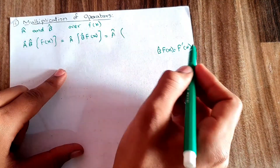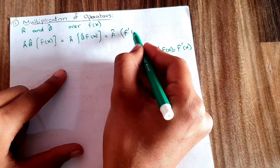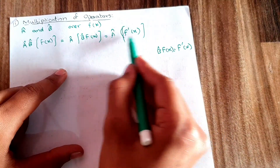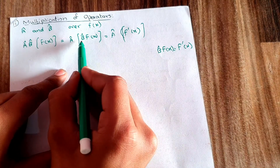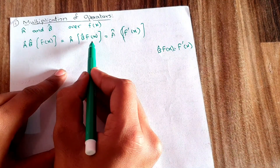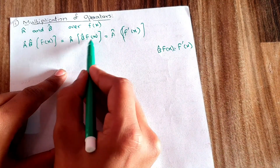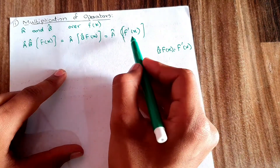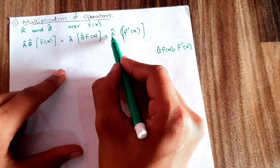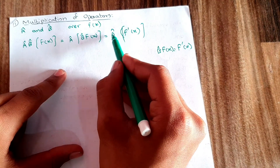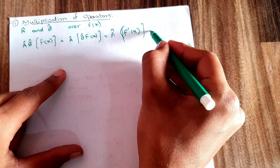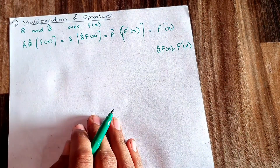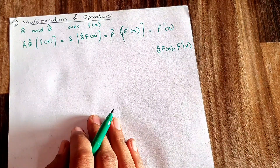After applying B on f(x) to get f'(x), we then apply operator A on this result. The answer comes out to be f''(x). This is how the operator multiplication should be applied — right to left, B first, then A.